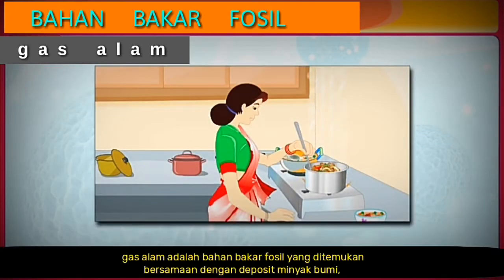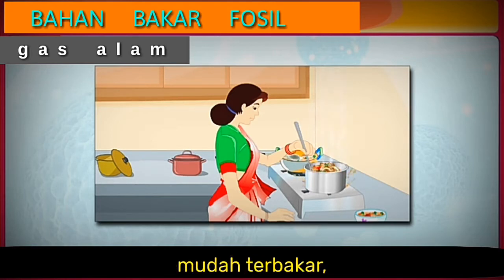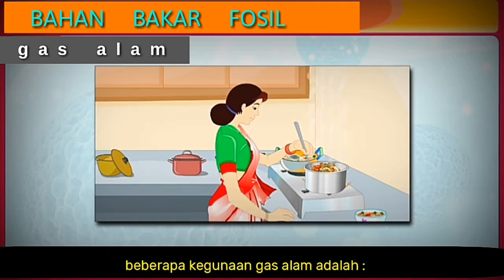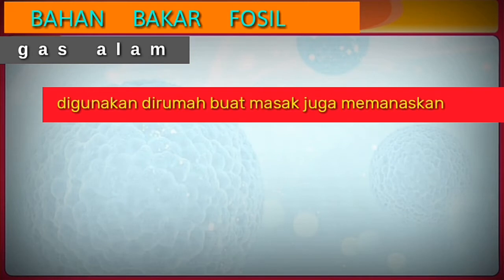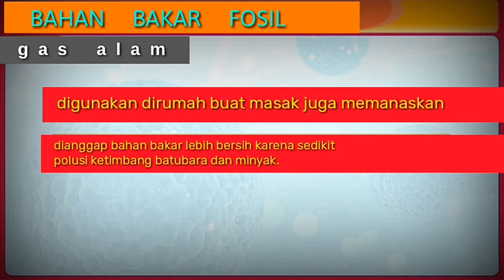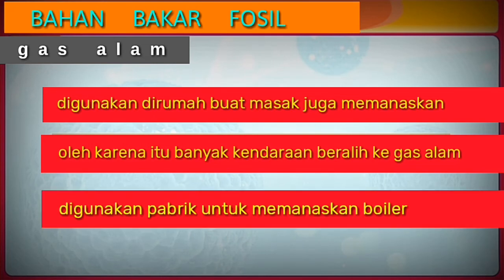Natural gas is a fossil fuel which is found along with petroleum deposits deep under the earth's surface. It is a colourless and odourless gas, and it is highly inflammable. Natural gas on burning generates heat and light, making it a good domestic fuel. It is used in homes for cooking and heating. It is considered a cleaner fuel as it causes less pollution than coal and oil, and many vehicles are now switching to natural gas. It is also used in factories for heating boilers.